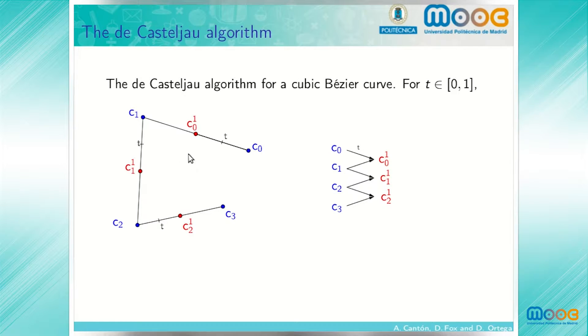We subdivide each of these segments into subintervals of lengths proportional to t and 1 minus t and we indicate the point affecting the subdivision. These three points are indicated in red. They're the points of the second generation of the de Casteljau algorithm.